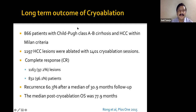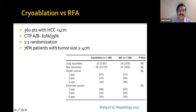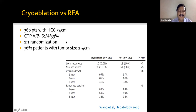Long-term outcomes for cryoablation in a study of 866 patients showed complete response in 97% of lesions and 96% of patients. Recurrence rate was around 60% after a median of 30 months, and median post-cryoablation overall survival was 77 months. Comparison with RFA in 360 patients (76% with tumors 2-4 cm) showed cryoablation and RFA were comparable in local recurrence, new occurrence, overall survival, and tumor-free survival.